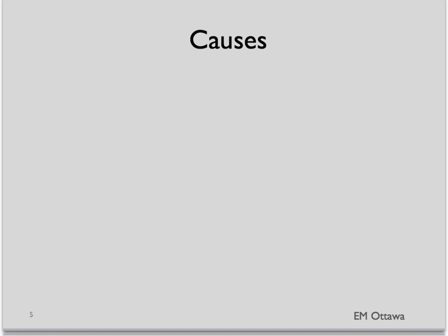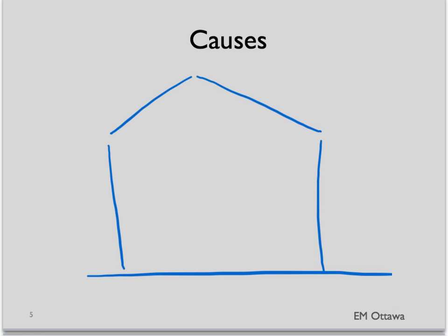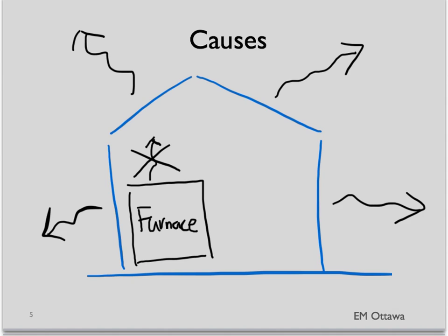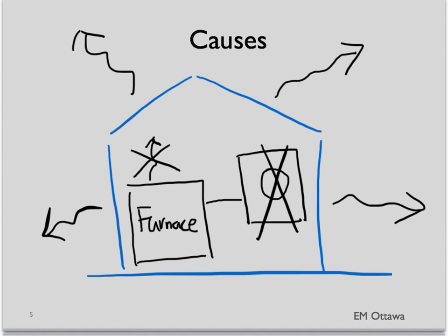How might someone become hypothermic? Well, if you imagine the body like a house and you're trying to keep the heat in, it's either that the heating element or furnace is not working well, causing decreased heat production, or the heat is escaping from the house, or the thermostat for the furnace is not set properly. Let's talk about each.